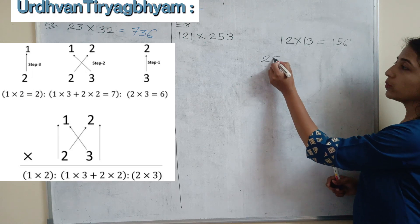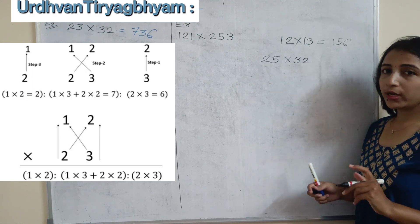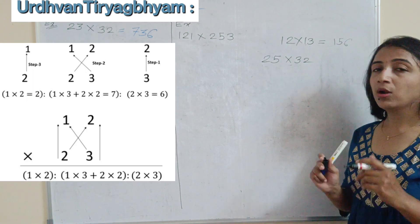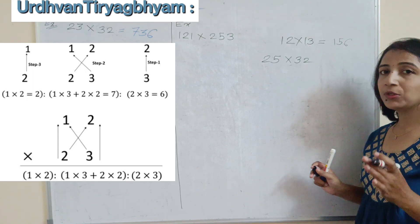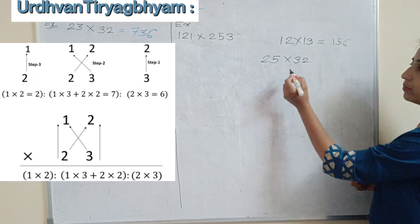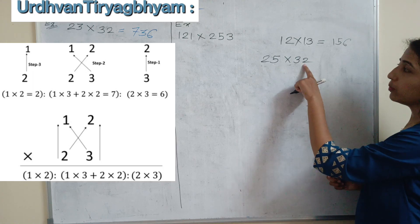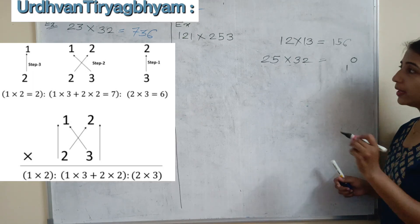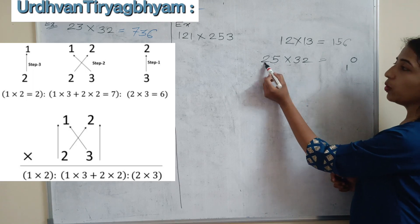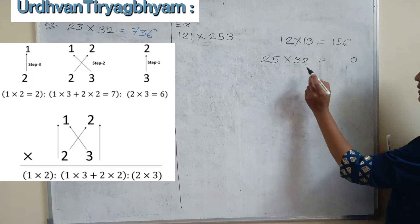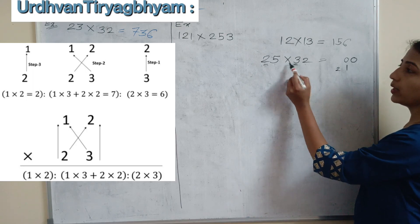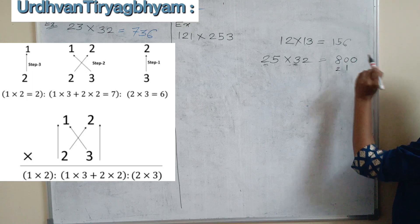Similarly, let's find the product of 25 multiplied by 32. Unit place product: 5 into 2 is 10 — write 0 and carry 1. Cross product: 2 into 2 plus 5 into 3 is 4 plus 15 equals 19, plus carry 1 gives 20 — write 0, carry 2. Last vertical: 2 into 3 is 6, plus carry 2 gives 8. So the answer is 800.